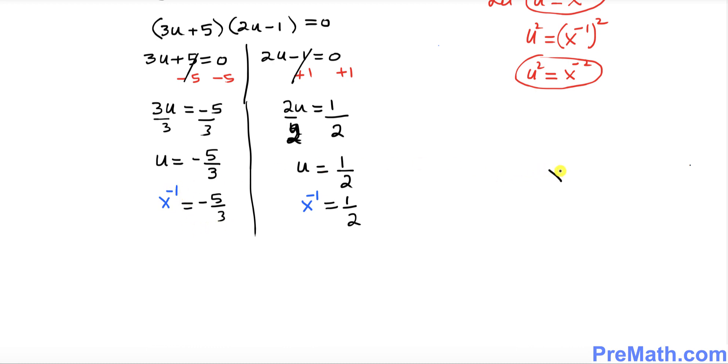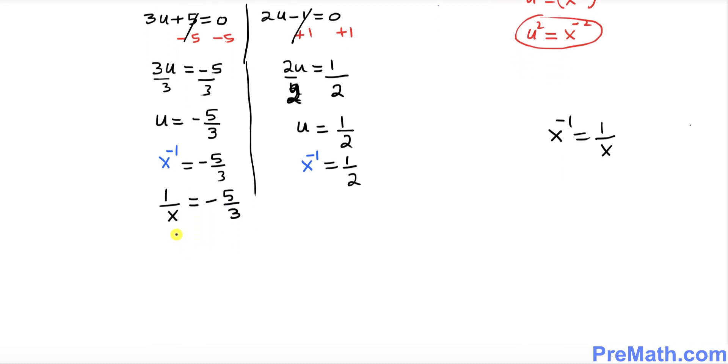Let me ask you: x power negative 1 is same as 1 over x. This is one of the facts. So I can put down 1 over x equal to negative 5 over 3. So what I'm going to do is I'm going to flip these both fractions over. That means the numerator becomes denominator and denominator becomes numerator.